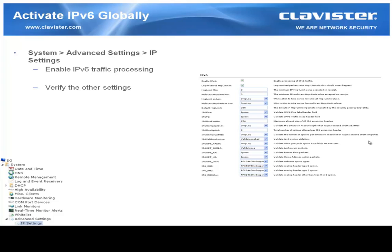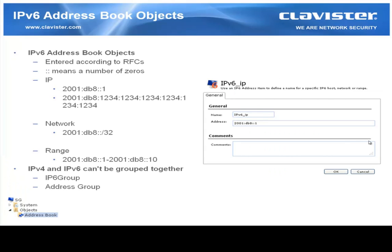Here you enable IPv6 traffic processing and then you can also adjust a lot of other settings. If you look at the address book, you find it in Objects, Address Book. Here we can create address book objects based on IPv6 and we can add them according to the RFC documents. For example, if we have two colon characters, that is shorthand for a number of zeros.